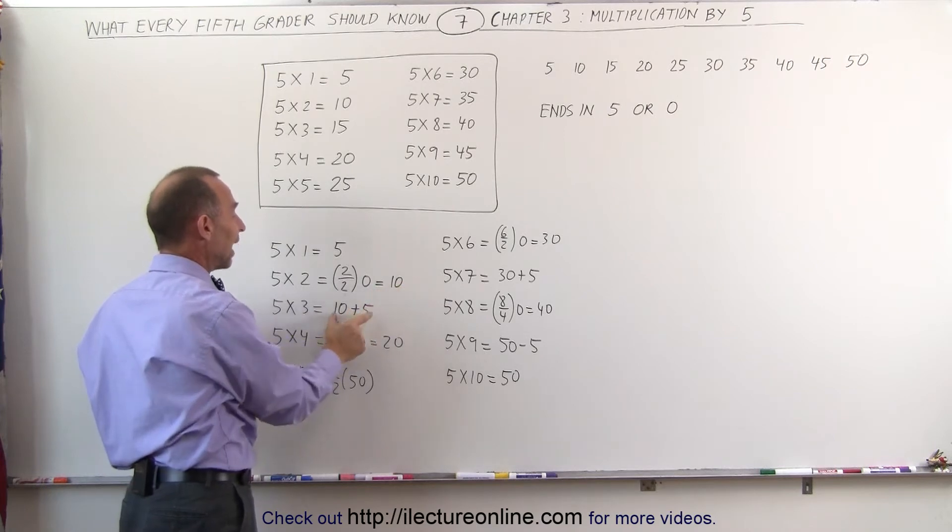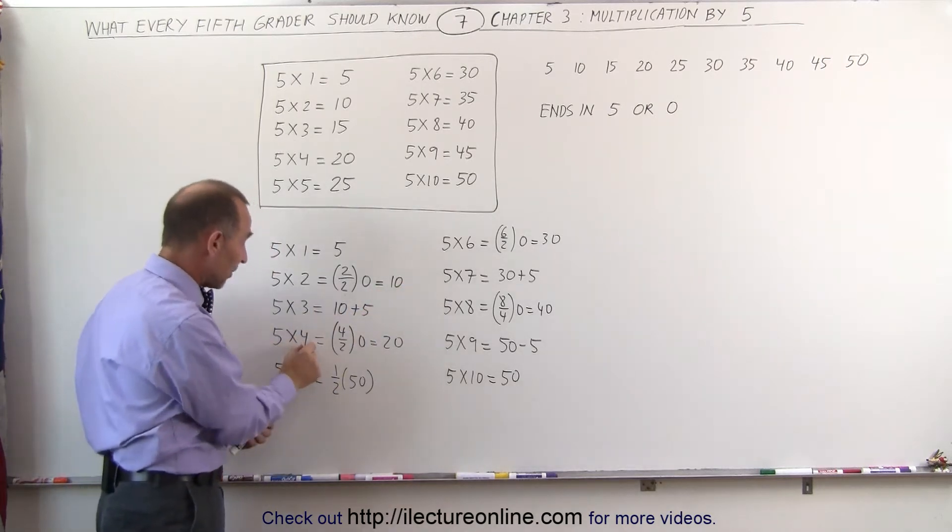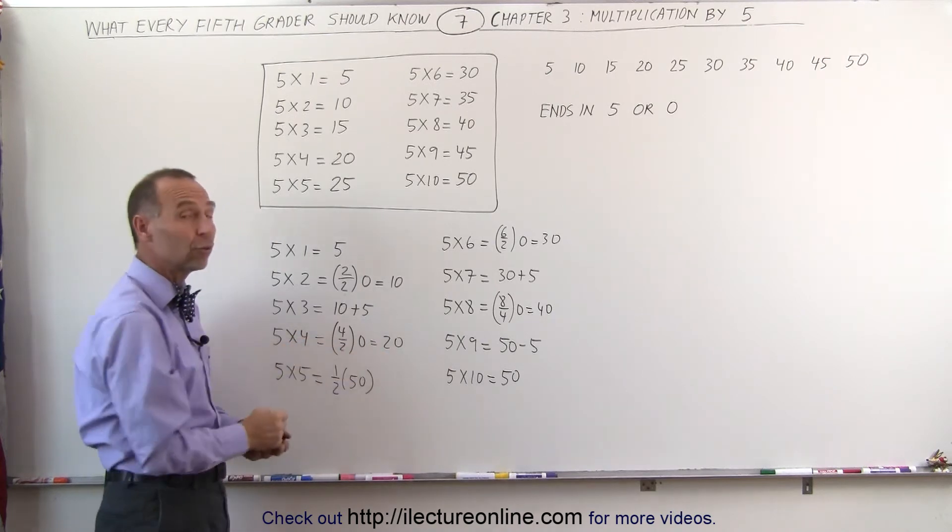5 times 3 is simply the previous answer, add 5 to it. 5 times 4, again, you take the number 4 divided by 2, half of 4 is 2, add a 0, you get 20.